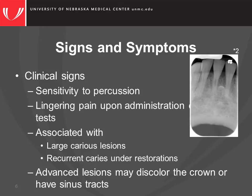Internal resorption is often associated with large carious lesions or recurrent caries under restorations. Advanced lesions may discolor the crown or have sinus tracts present. The main sign, however, is the radiographic appearance, which will be covered next.